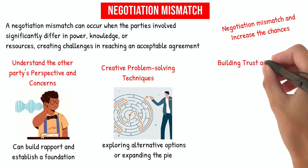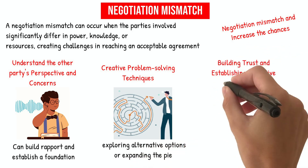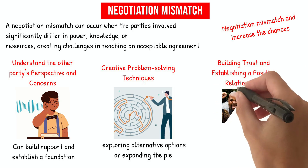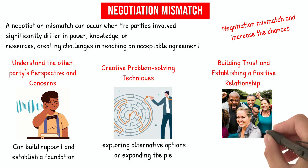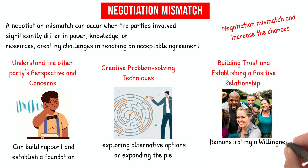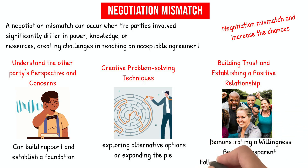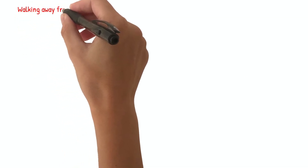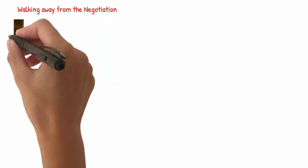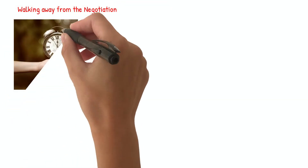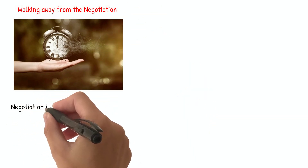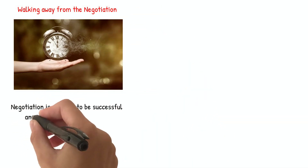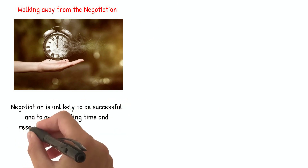Third, negotiators can focus on building trust and establishing a positive relationship with the other party. This can involve demonstrating a willingness to compromise, being transparent about one's interests and constraints, and following through on commitments made during the negotiation process. Finally, walking away from the negotiation may be necessary if an agreement cannot be reached. While this can be difficult, it is essential to recognize when a negotiation is unlikely to be successful and to avoid wasting time and resources on a fruitless endeavor.